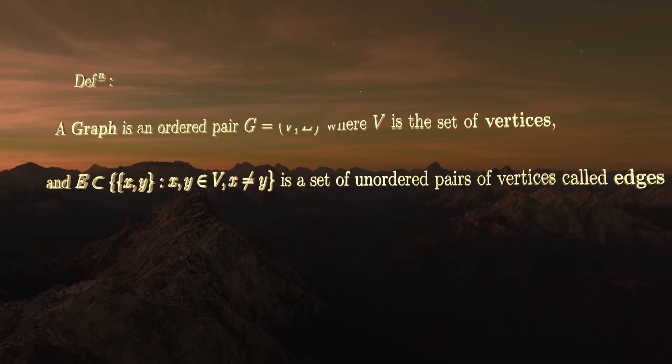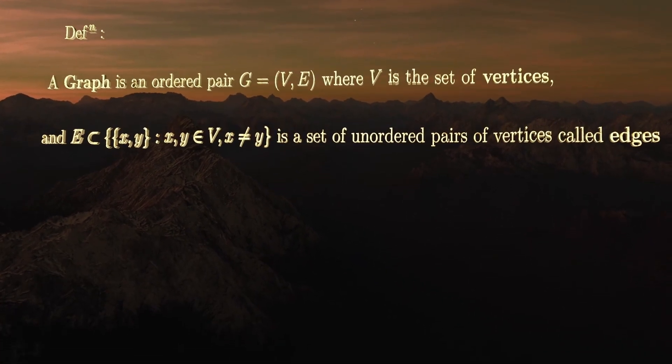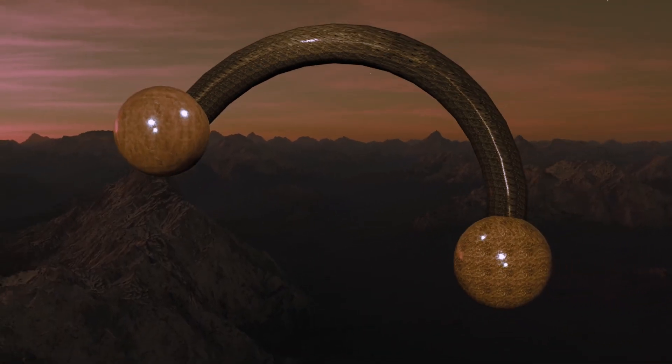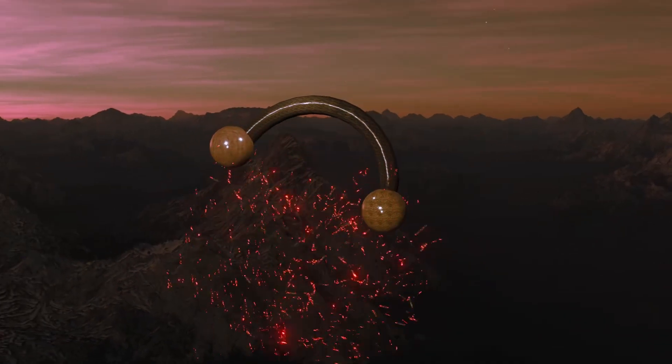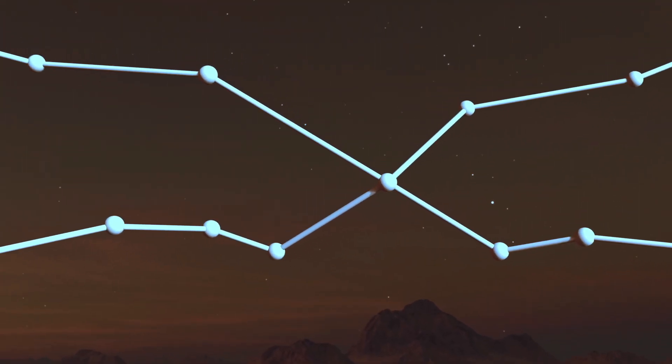By defining the edge set as a set, it means you can't have multiple edges between two given nodes, because duplicates in a set just get swallowed up. Finally, it's very important to note that in graph theory, we always assume the graph has a finite number of vertices, unless stated otherwise.